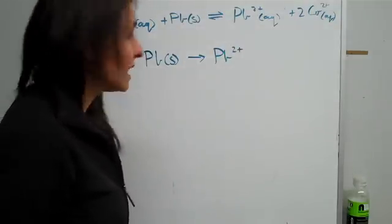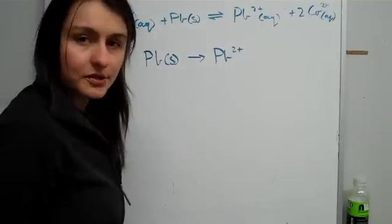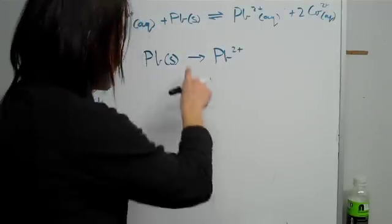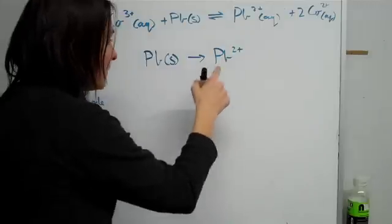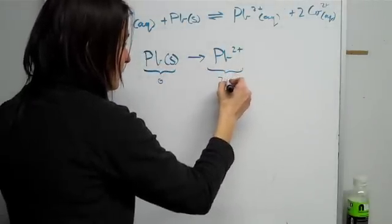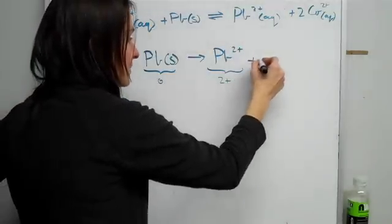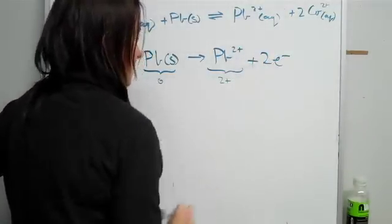Now what that means is basically it's not balanced yet because you need to insert electrons to balance that out. The way we balance it is because this charge is zero and this charge is plus two, then it means that we need two electrons to neutralize that. So we need to add two electrons.